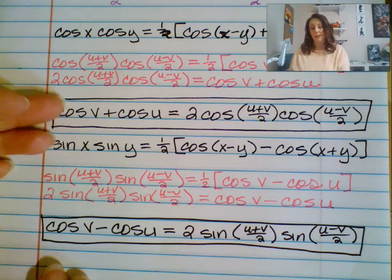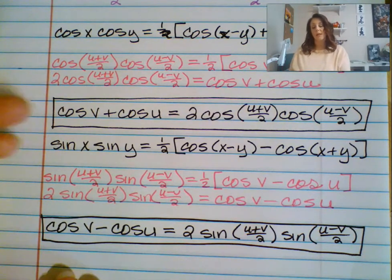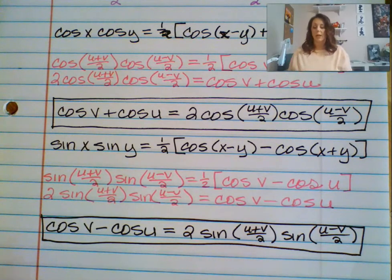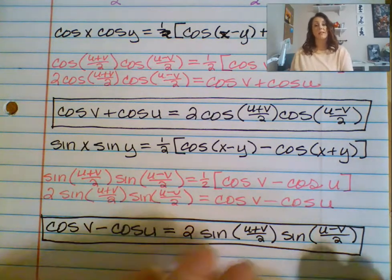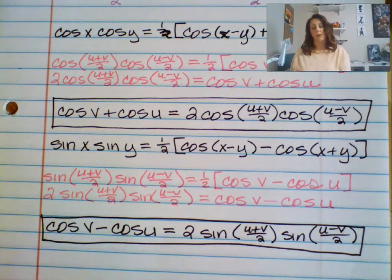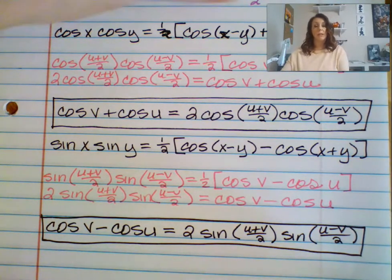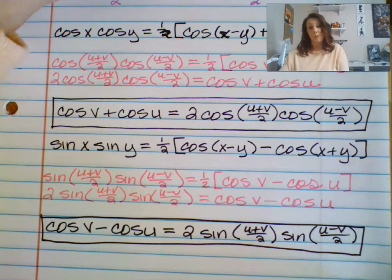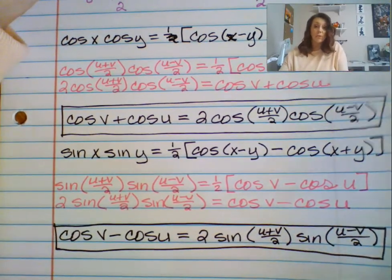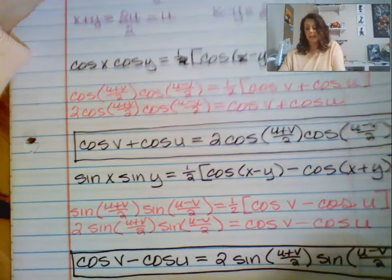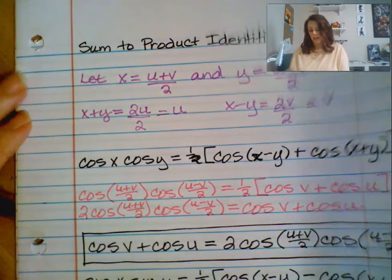Each of these identities takes a sum or difference of two ratios and allows us to expand it into a product. We can also go the opposite direction — if we know something about the product, we can condense it. Ultimately, it's going to involve two trig functions on both sides of the equation, and it may make a process simpler or create like terms when proving identities and finding angle measures.